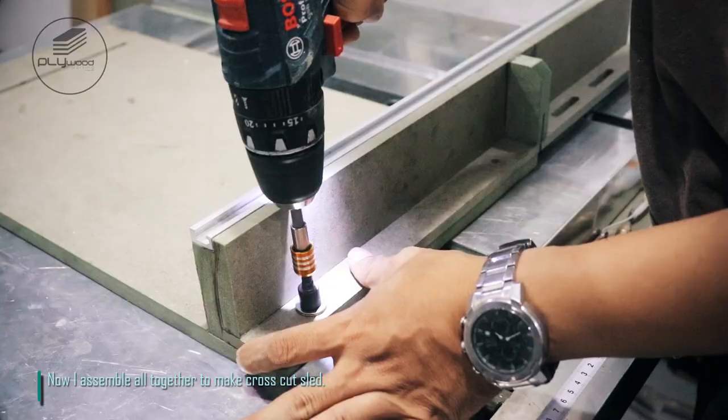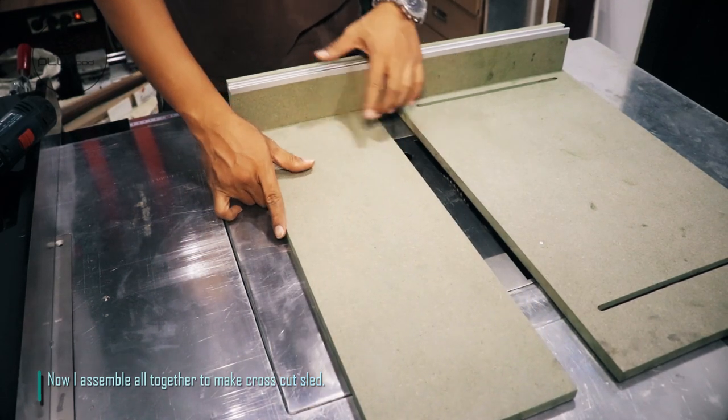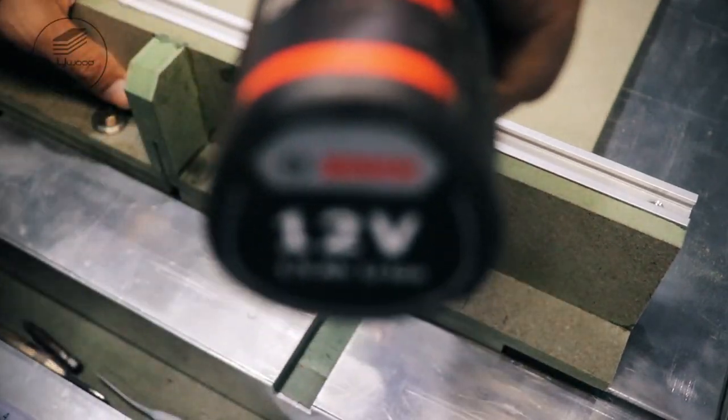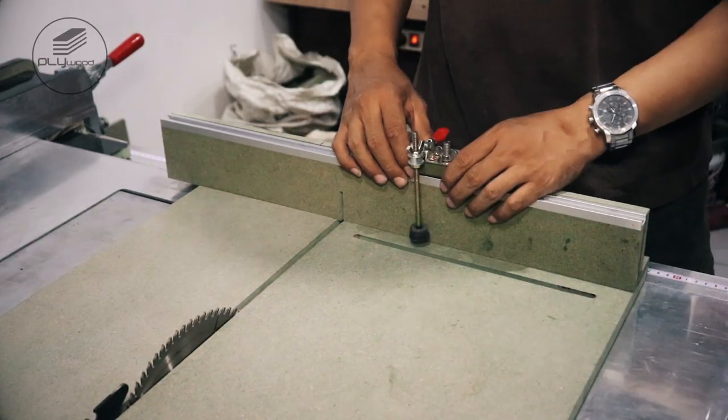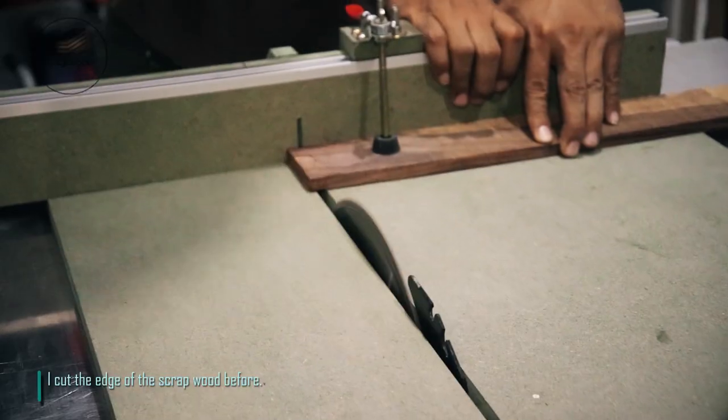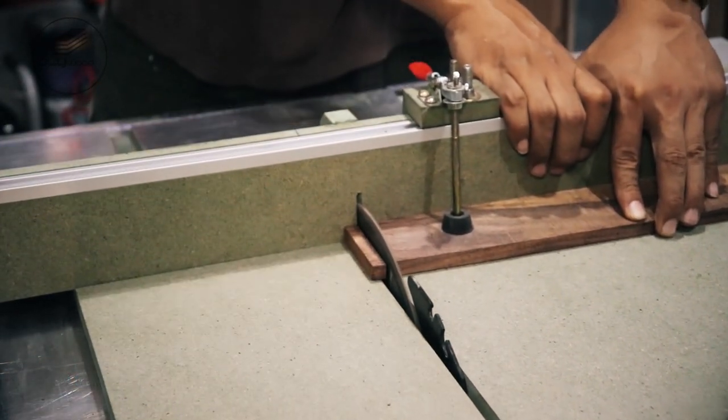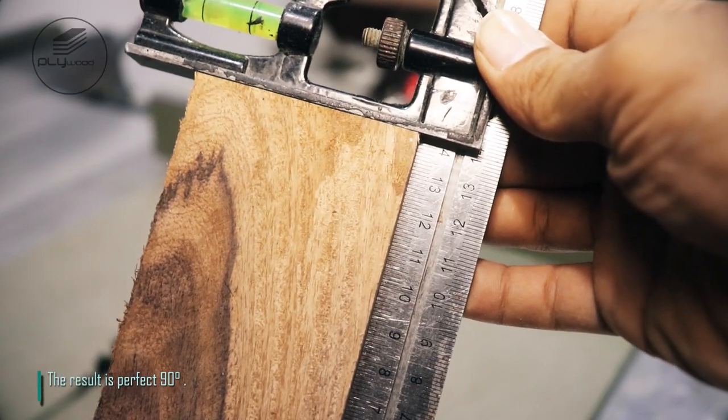Now I assemble all together to make cross cut sled. I cut the edge of the scrap wood before. The result is perfect 90 degrees.